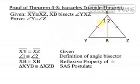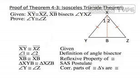This side is congruent to this side, this side is congruent to itself, and we have congruent included angles. And finally, we can say that angle Y is congruent to angle Z because corresponding parts of congruent triangles are congruent.